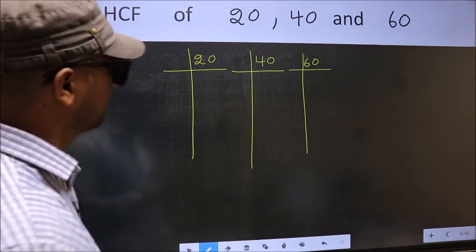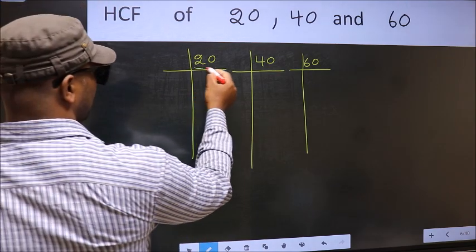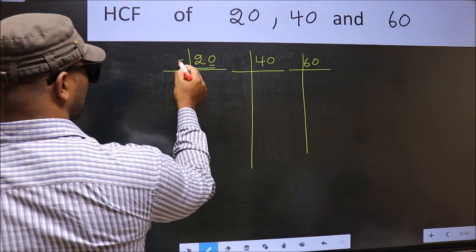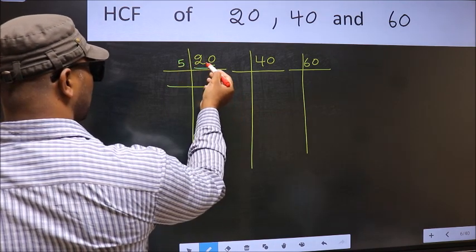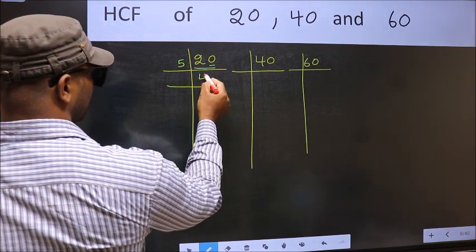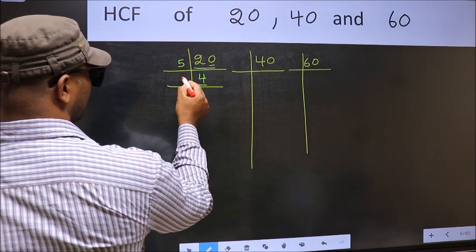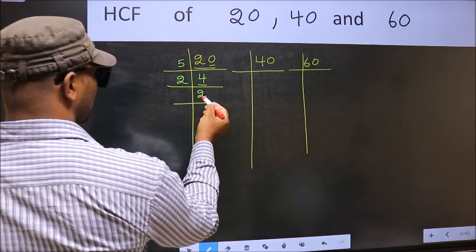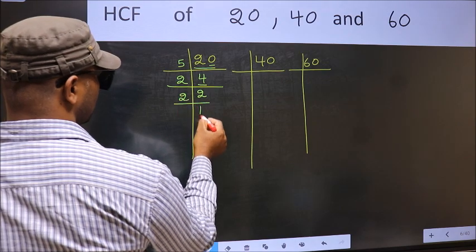Next. Here we have 20. Last digit 0, so take 5. When do we get 20 in 5 table? 5, 4 is 20. Now 4 is 2, 2 is 4. Now 2 is a prime number, so 2, 1 is 2.